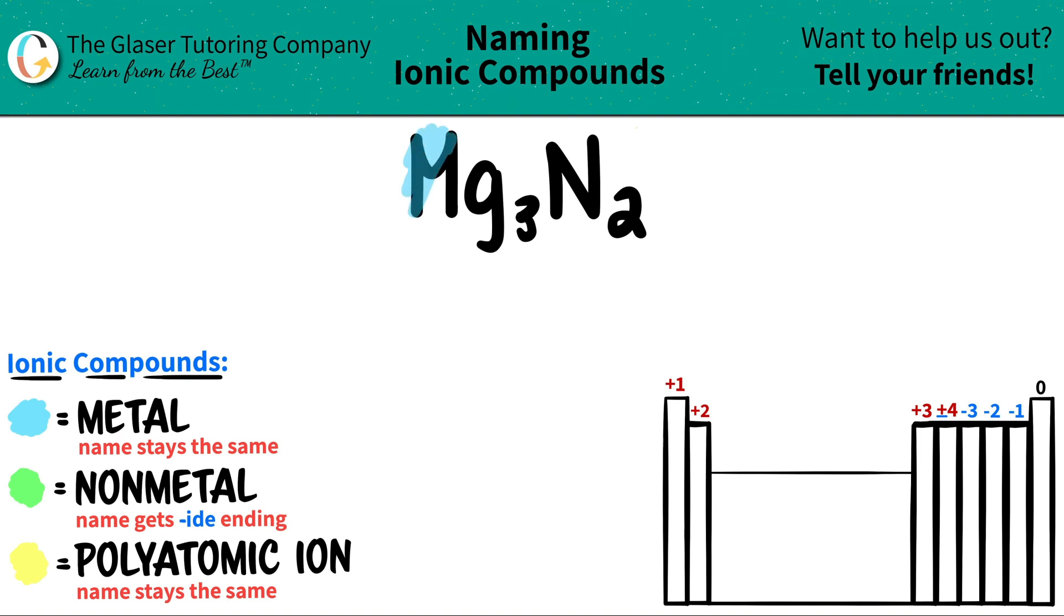Magnesium, Mg, is a metal because it lives right here on the periodic table. Remember, anything in group two is a metal.